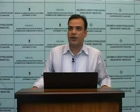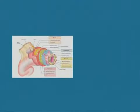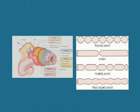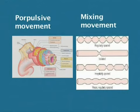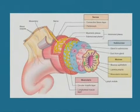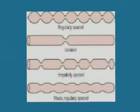Various movements take place in the GIT. They can be divided on a functional basis into two types: propulsive movements and mixing movements. Propulsive movements are those that cause food to move forward from one part of the digestive system to the other. Mixing movements help mix the food with different secretions inside the GIT.